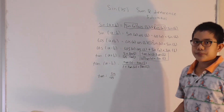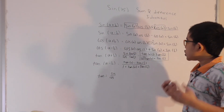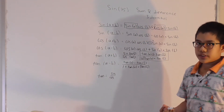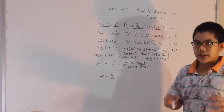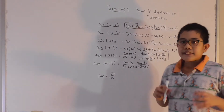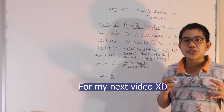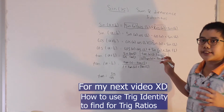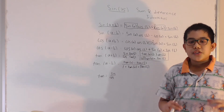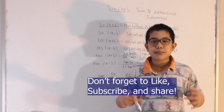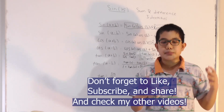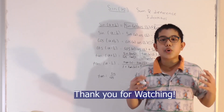So there we go — we've covered all the sum and difference identities for sine, cosine, and tangent. We can use these equations to solve for angles that don't comply with special angle values, like sine of 75 degrees. That will be demonstrated in my next video, where I'll show you how to use sum and difference identities to solve for large and relatively small angles. If you liked this video, don't forget to hit like, share, subscribe, and thank you for watching.